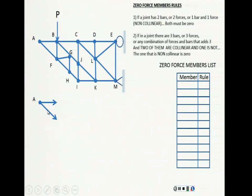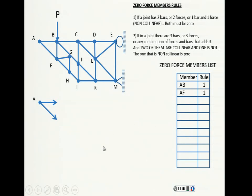Do you want to prove that? OK. Isolate this joint and do summation of forces in y equals zero. When you do that, the force AF — the vertical component — has to be zero because there's nothing else there. And when you do summation of forces in x, the only force is AB. So these two are zero. That is rule number one. Copy here: AB and AF, rule number one.